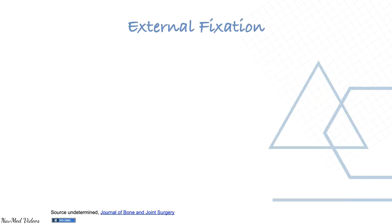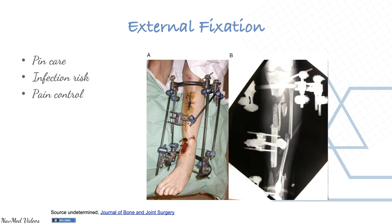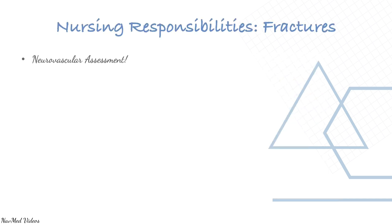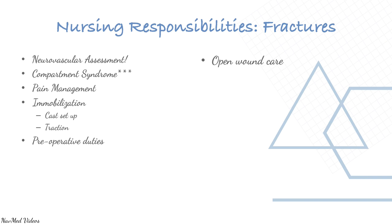External fixation is usually for open fractures, with pain control and infection risk being important concerns. This is an example of an external fixator used for open or comminuted fractures. Nursing responsibilities include neurovascular assessment, compartment syndrome monitoring, pain management, immobilization, preoperative duties, open wound care, tetanus, IV antibiotics, and covering wounds — do not remove an impaled object but stabilize it.